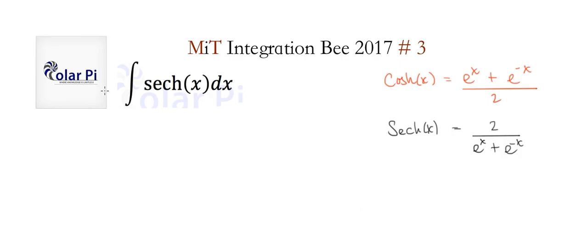Doing that looks like this, but we're going to write e to the minus x as 1 over e to the x. Then we need to get common denominators.